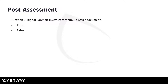Question number two: digital forensic investigators should never document — true or false? Obviously that's false. We want to document, and as mentioned throughout the course, we need a chain of custody document. In this video we talked about the federal rules of evidence, different laws and standards, the Fourth Amendment, the best evidence rule, and the Scientific Working Group on Digital Evidence. The next module — module two — covers the computer investigation process: the pre-investigation, the investigation phase, and the post-investigation phase.